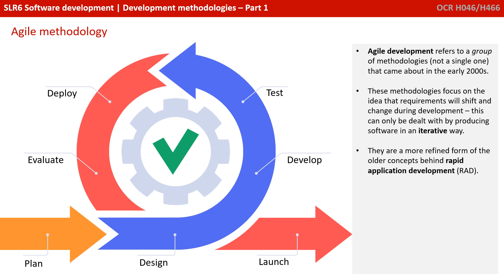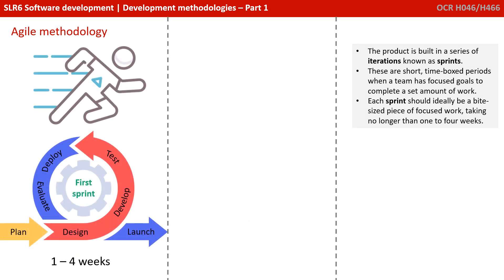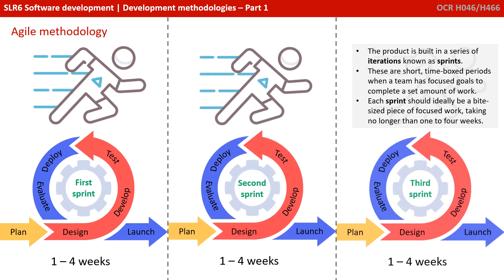Now let's turn our attention to agile methodologies. Agile development actually refers to a group of methodologies, not technically a single one, and they started to become popular in the early 2000s. These methodologies focused on the idea that requirements will shift and change during development, and this can only be dealt with by producing and developing software in an iterative way. They are a more refined form of the older concepts behind rapid application development. At the core of agile is the idea of building each iteration in what is known as a sprint cycle — short, time-boxed periods when a team has focused goals to complete a set amount of work, typically taking no more than one to four weeks.